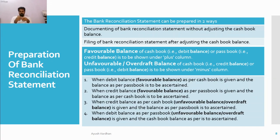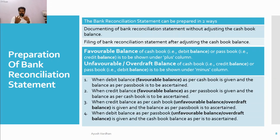There could be four methods: two methods for favorable balances and two methods for unfavorable balances. When you start the reconciliation, you have to take a basis — either the cash book or the pass book. In the favorable condition, you can start with the cash book or start with the pass book. In the case of overdraft or unfavorable, you start with the pass book or start with the cash book. So there are four total combinations.